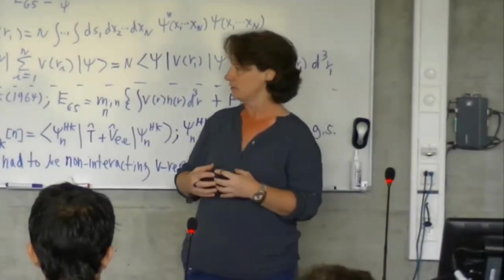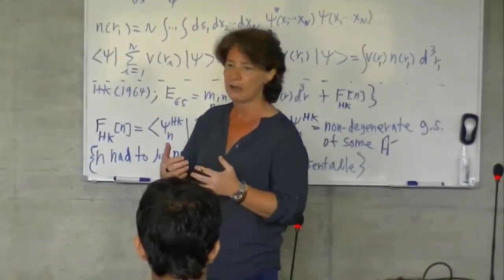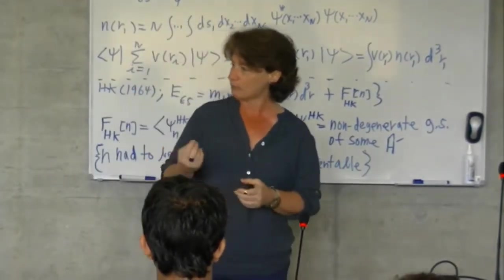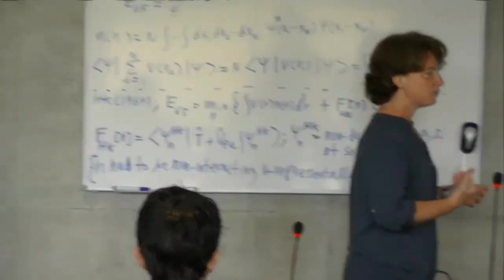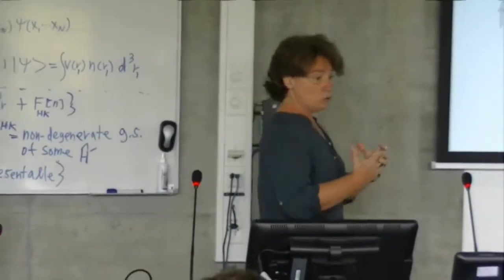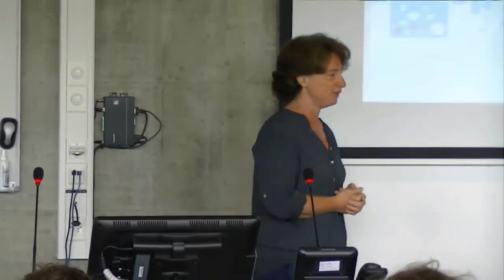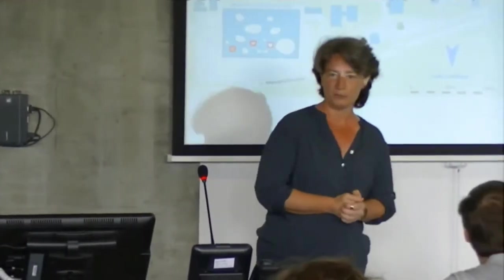With the other things that have changed, the structure has changed, I was saying. So now CECAM is a network of 18 nodes scattered throughout Europe. We have one node in Israel. And we try to coordinate activities to give focus or one focal point, one of the many focal points in the world, to promote computations and modeling.